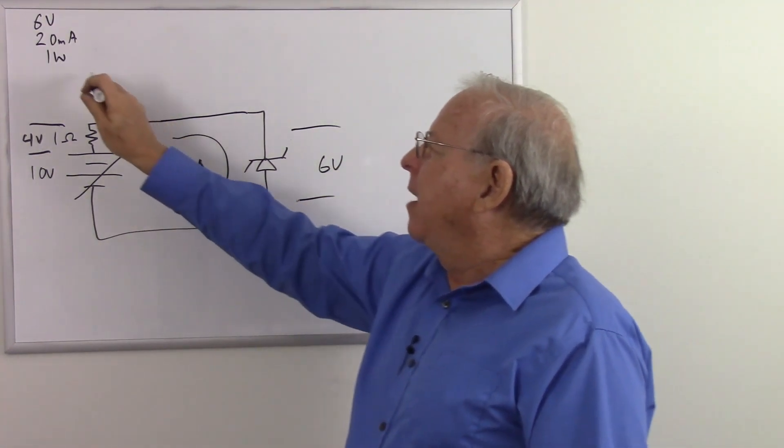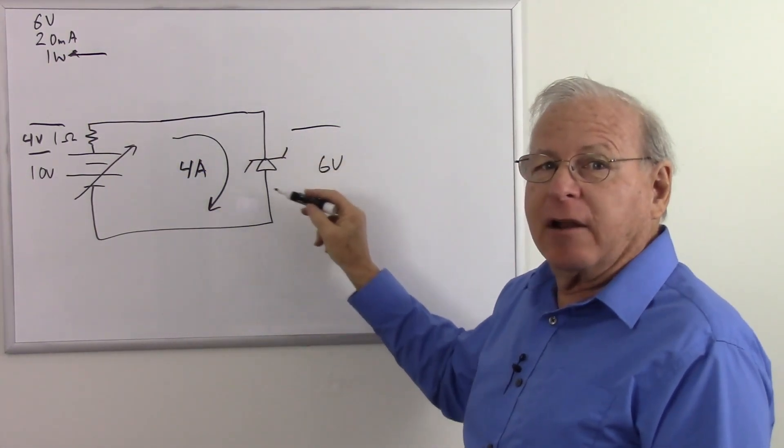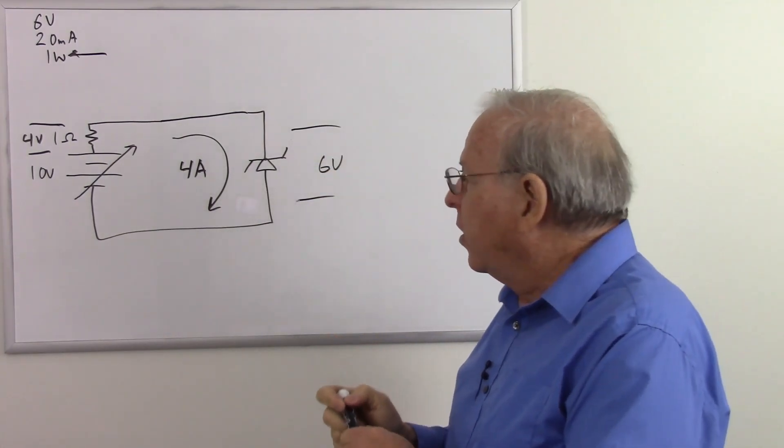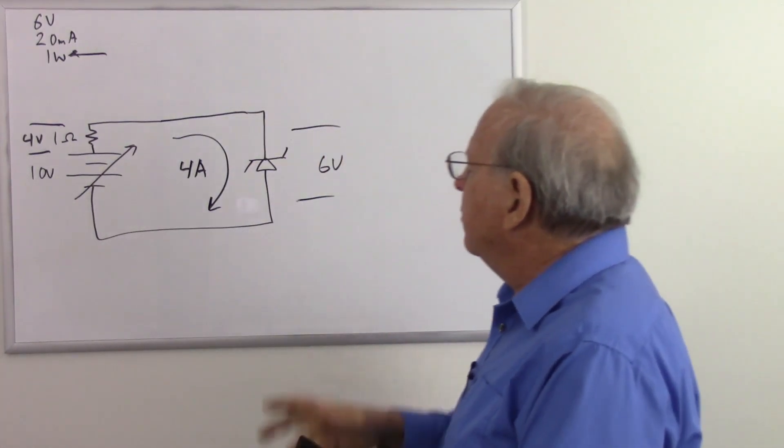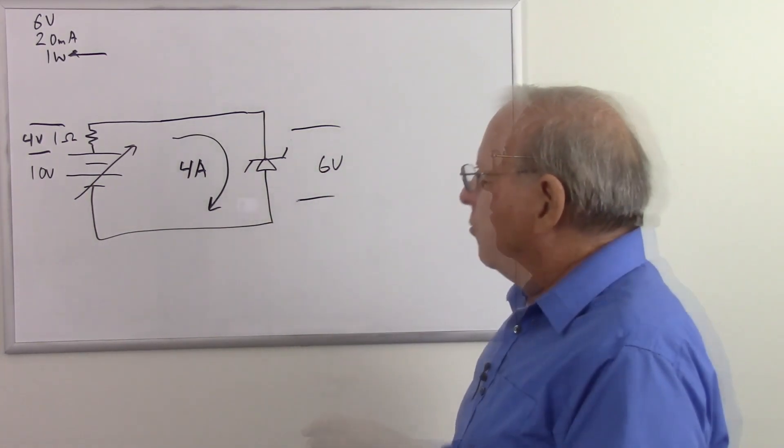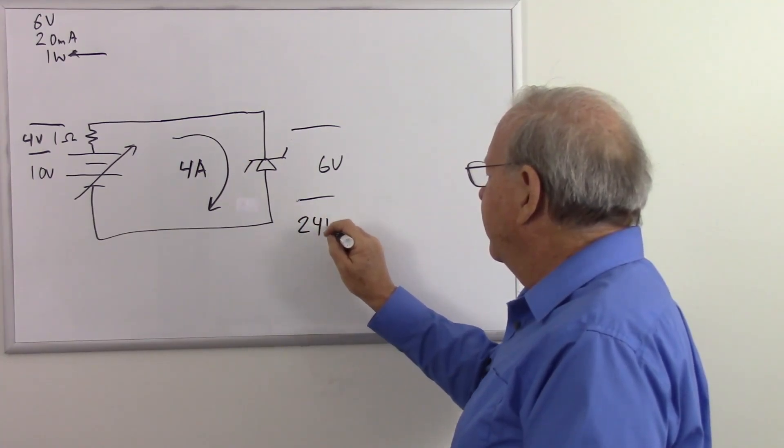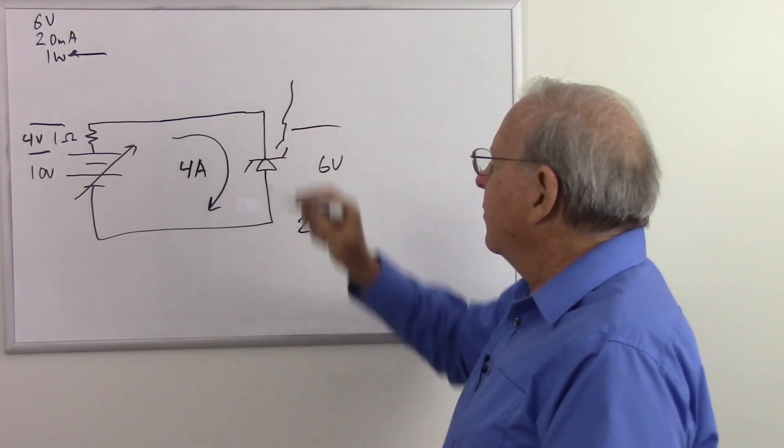Well, what's the power rating? 1 watt. If we're exceeding 1 watt, we might let the smoke out of our diode. Let's see if we're exceeding 1 watt. Well, power is equal to voltage times current. So 6 volts times 4 amps. I should be able to do that in my head. That's going to be 24 watts. Yep. Smoke got out of the diode.